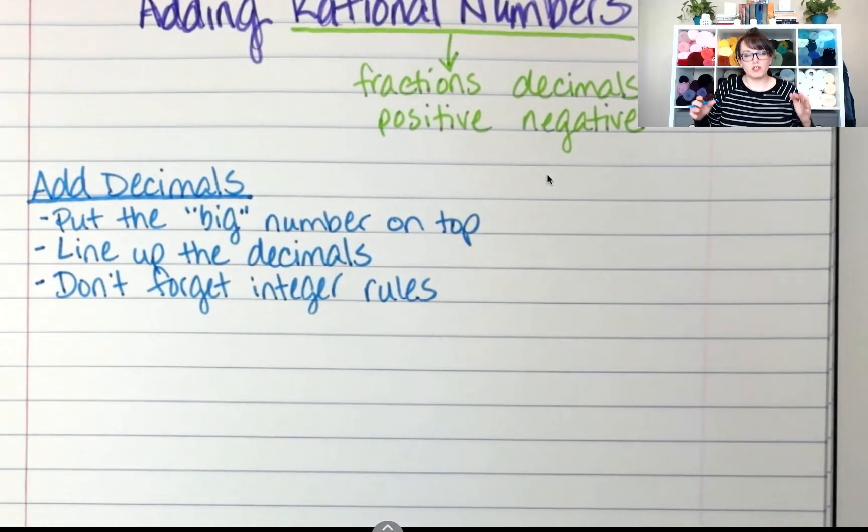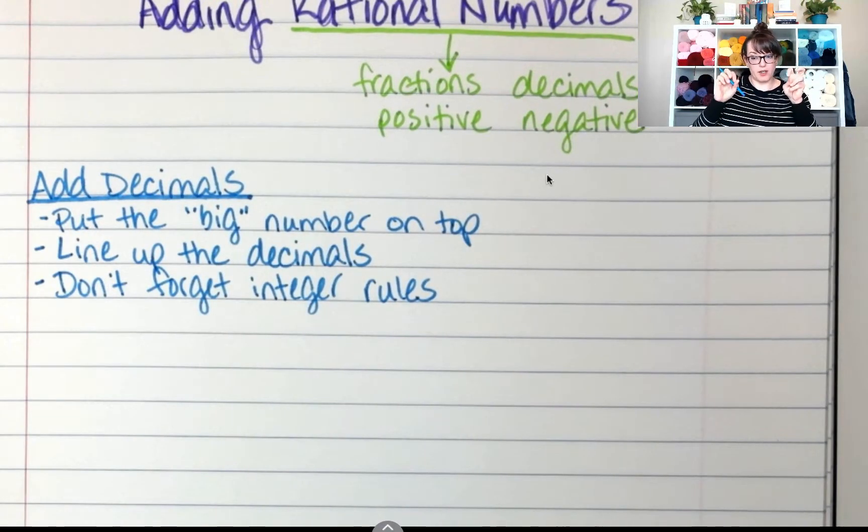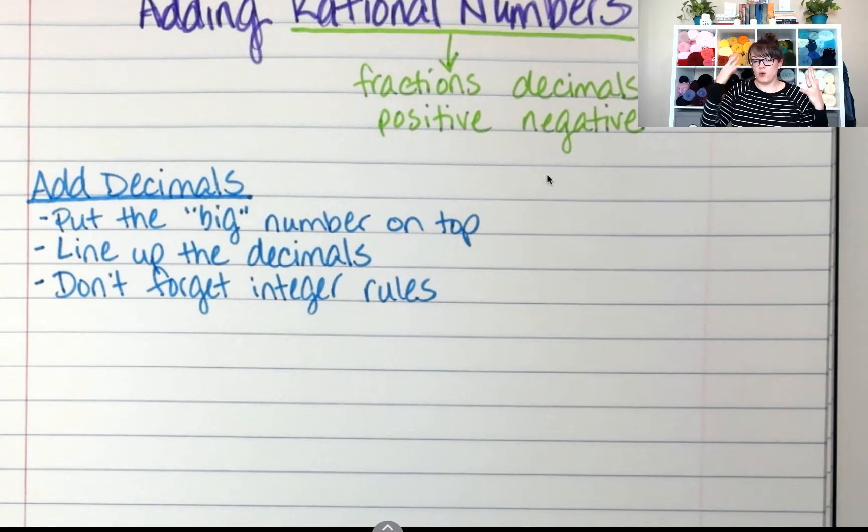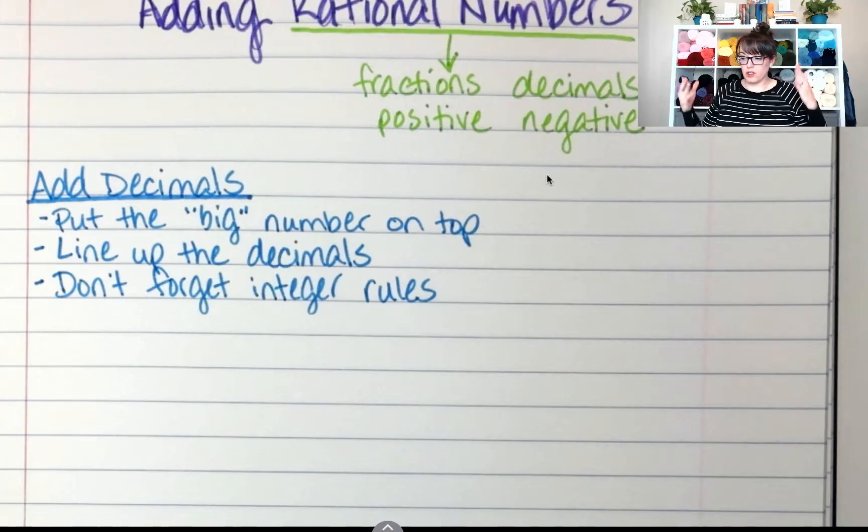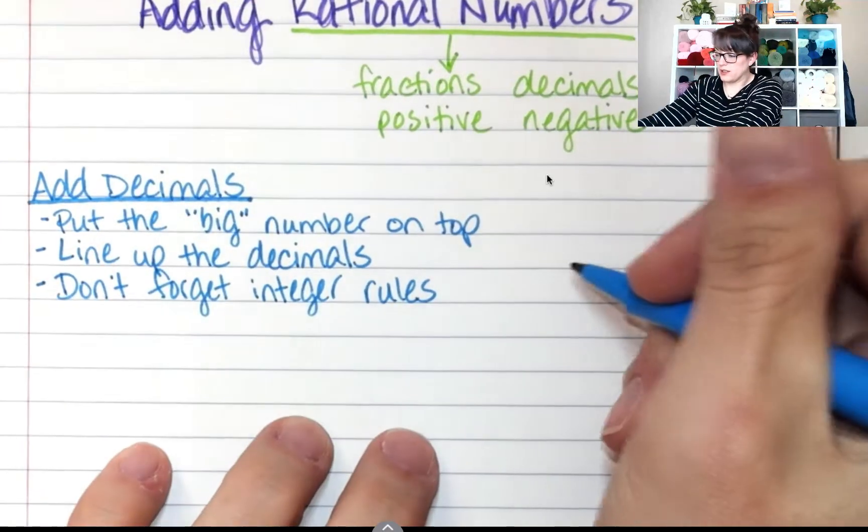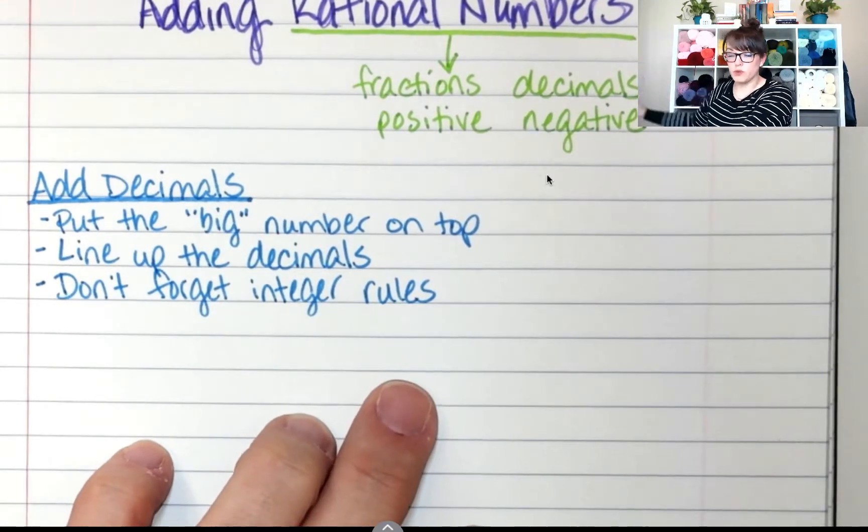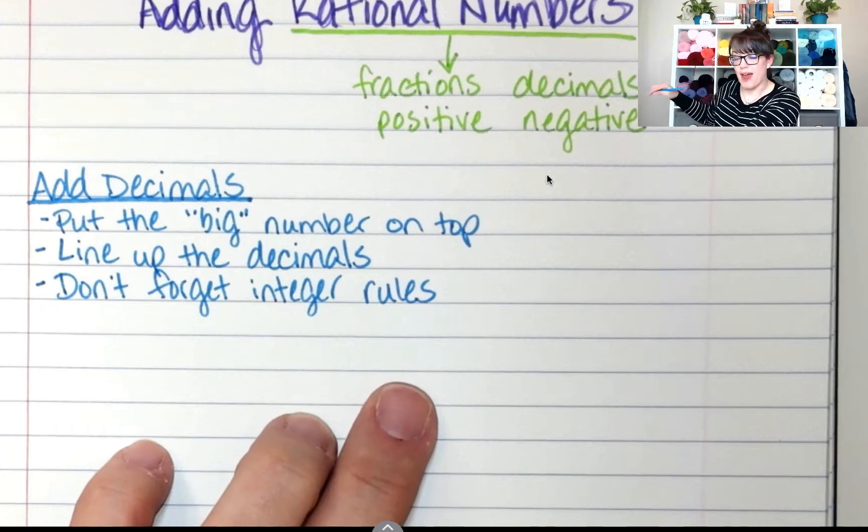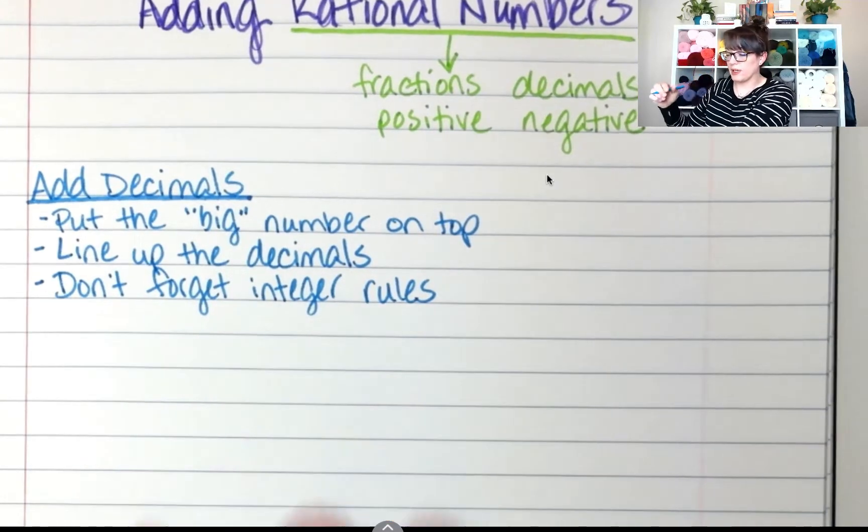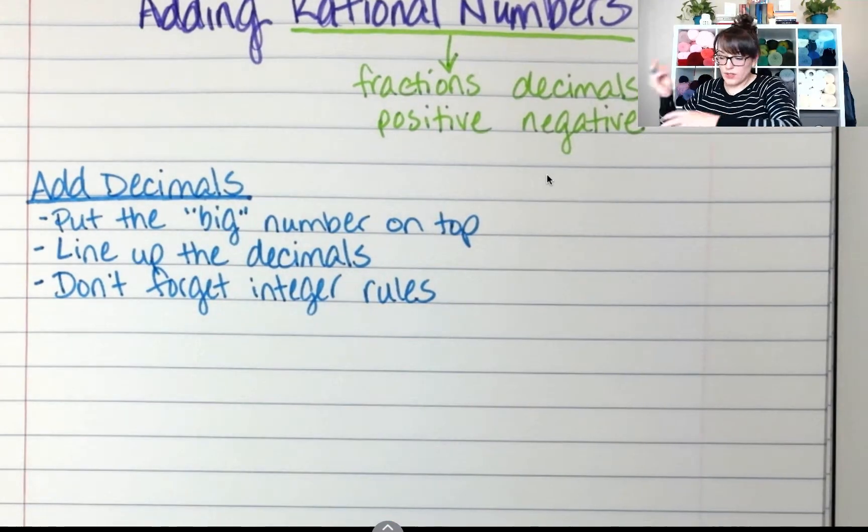So remember with integers, the bigger number wins. So if you have negative 5 and you add 2, you start at negative 5 on the number line and you would go up 2 spaces. So you'd end up at negative 3. So let's try this out.